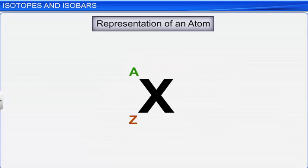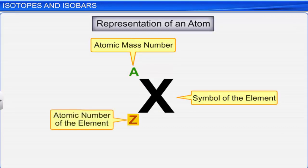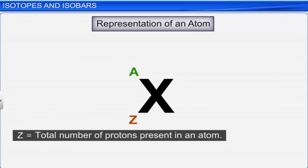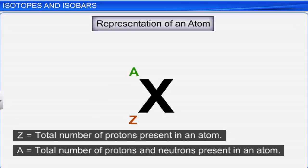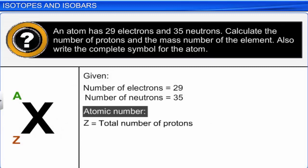The composition of an atom can be represented symbolically as ᴬ_Z X. The symbol X represents the element, the superscript A on the left-hand side represents the atomic mass number, and the subscript Z represents the atomic number of the element. The atomic number Z gives the total number of protons present in an atom, while the atomic mass number gives the total number of protons and neutrons. For example: an atom has 29 electrons and 35 neutrons. Since atomic number Z equals the number of protons, which also equals the number of electrons, the number of protons is 29.